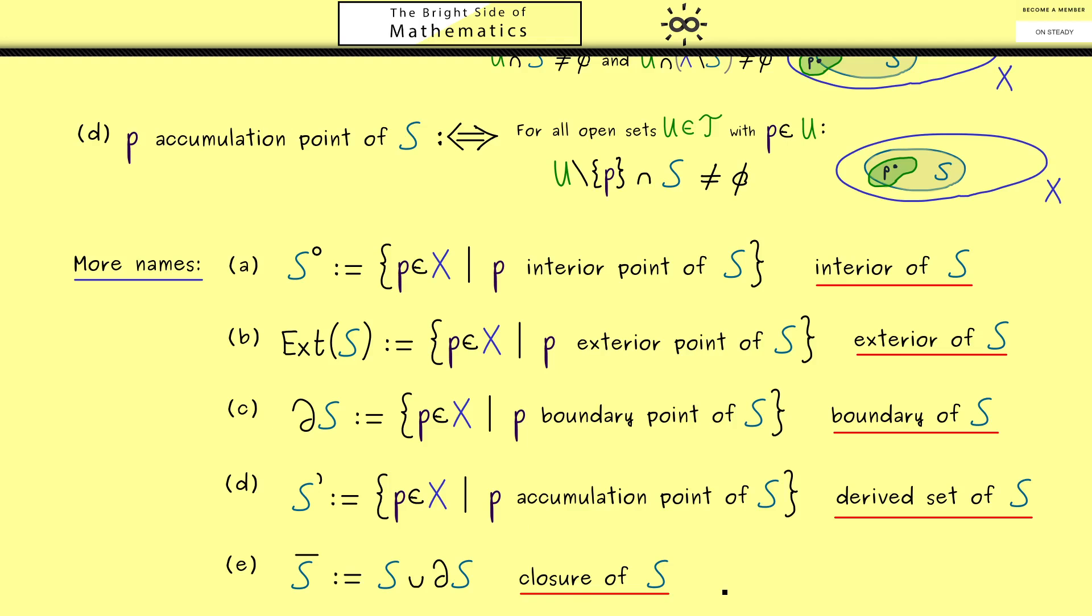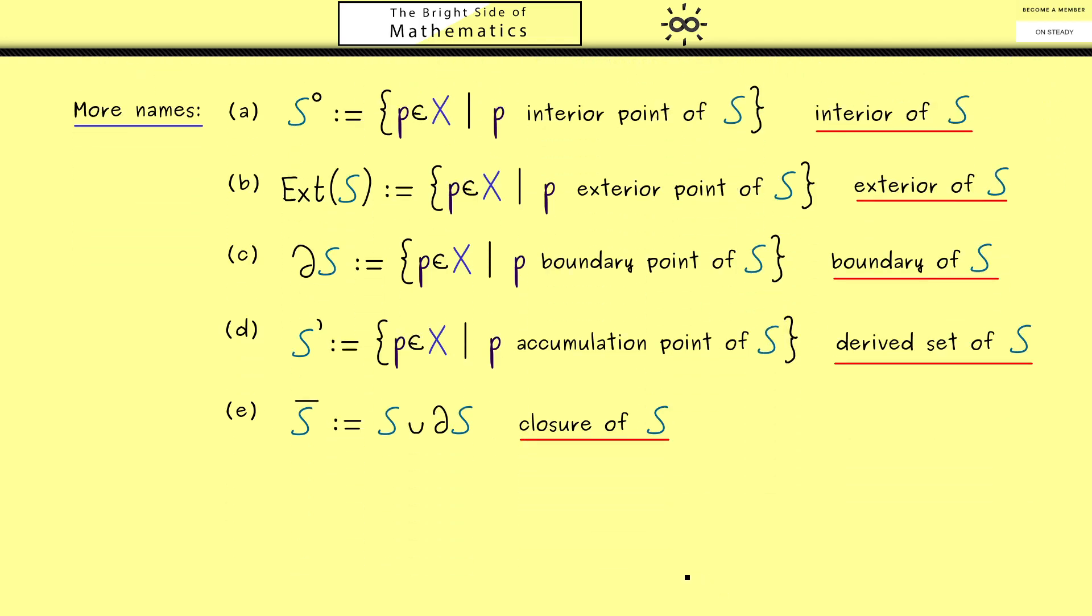So let's take an example of a topology which is not so common. However, the set X can be very common, so let's take the real number line. On the other hand, T should not be the standard topology, so let's define it in the following way.